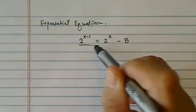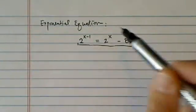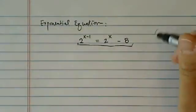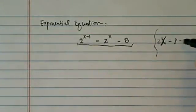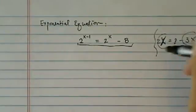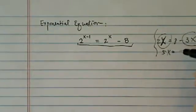Solving this type of exponential equation, we gather the variables. Much like if we have 2x equal to 8 minus 3x, we're going to gather the terms together: 5x equal to 8.